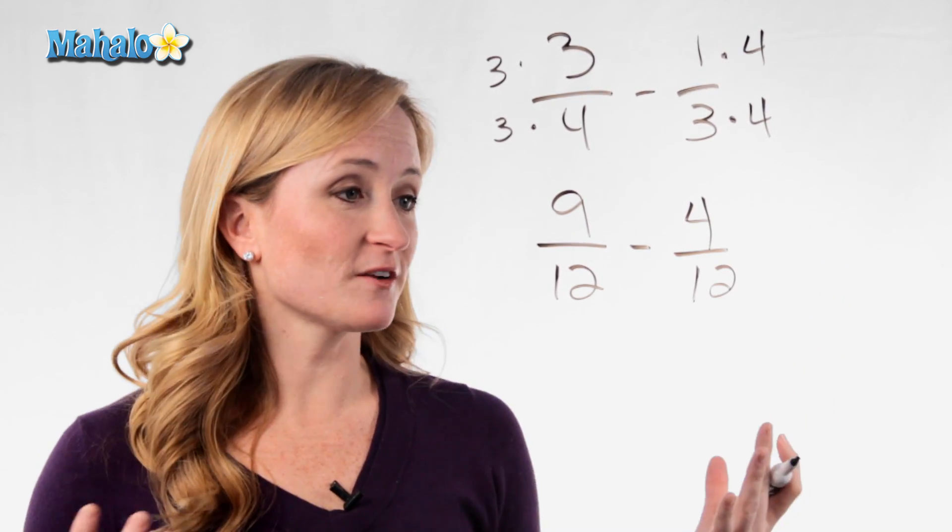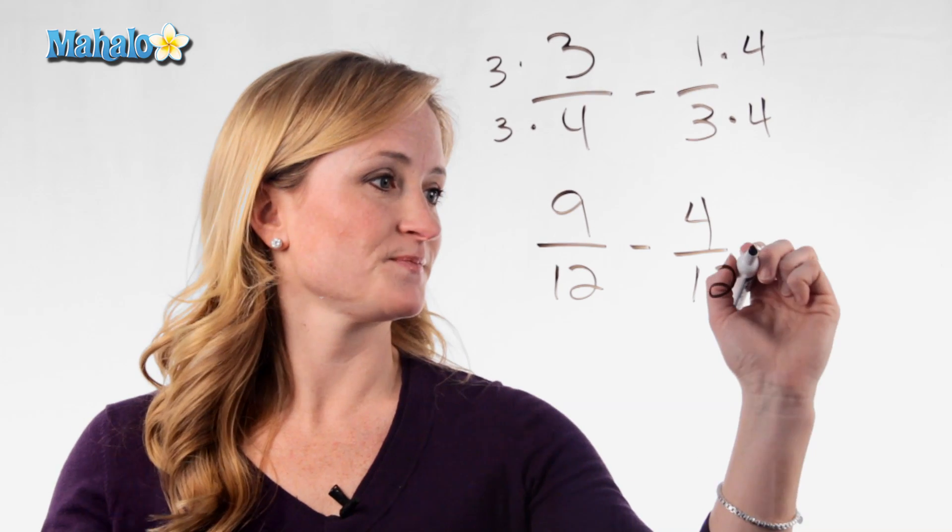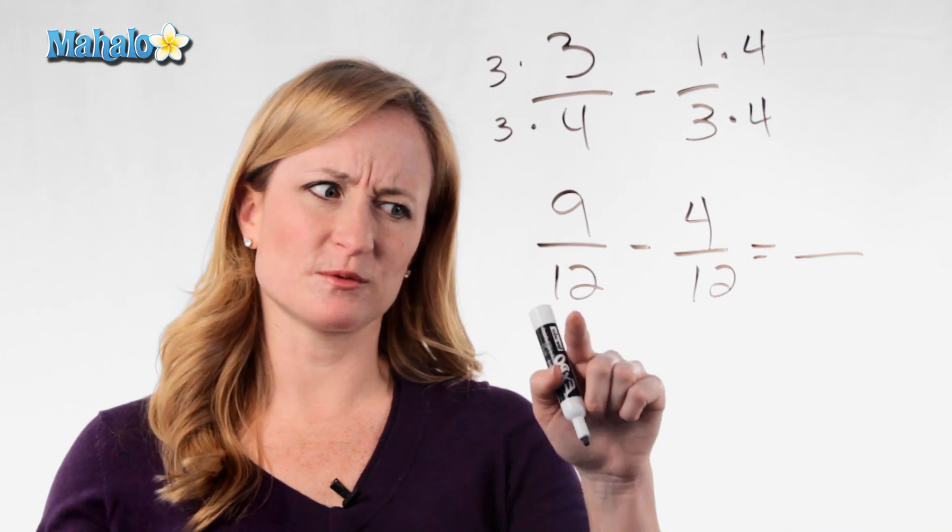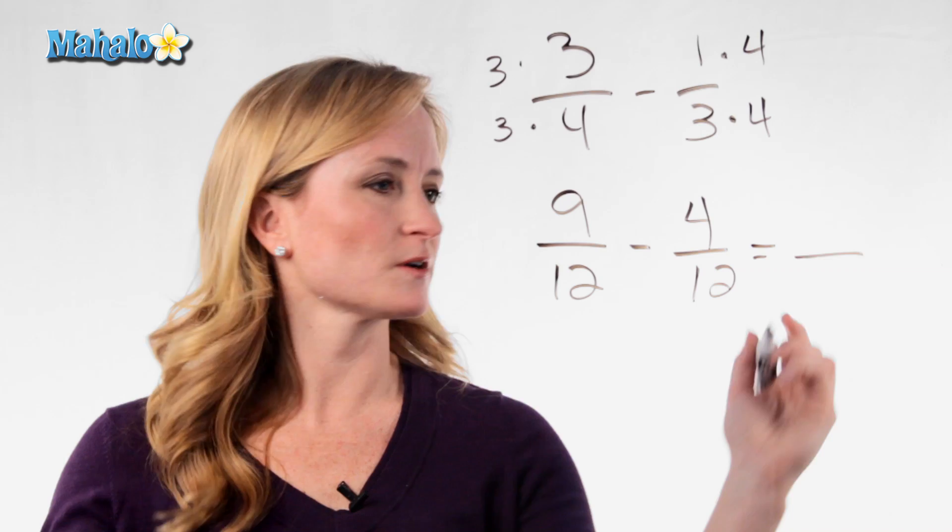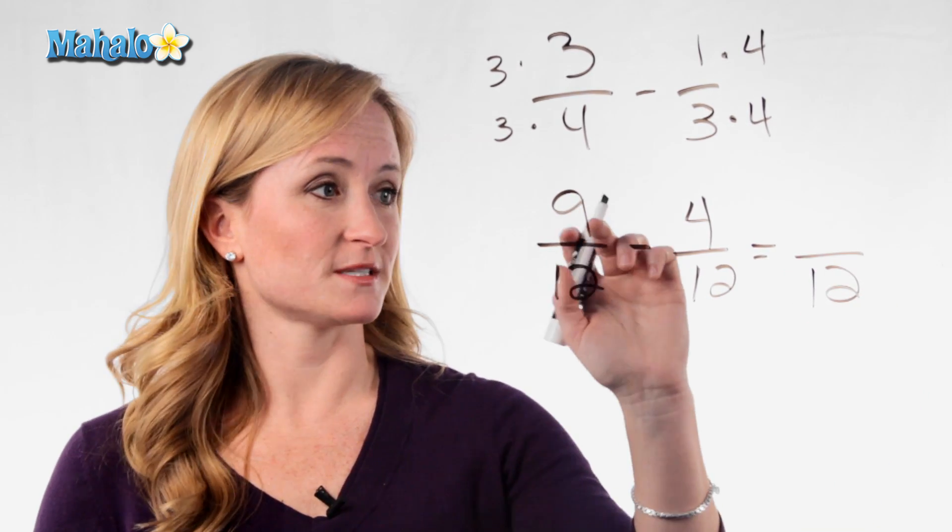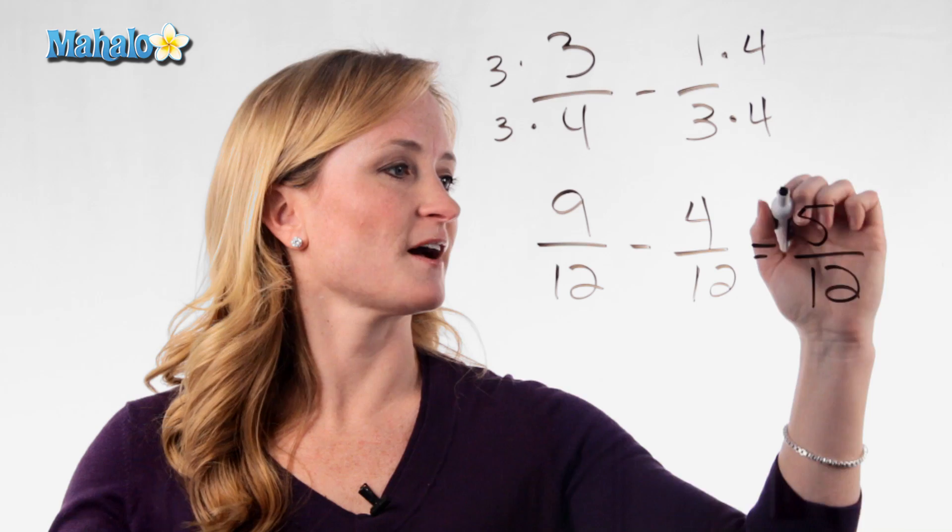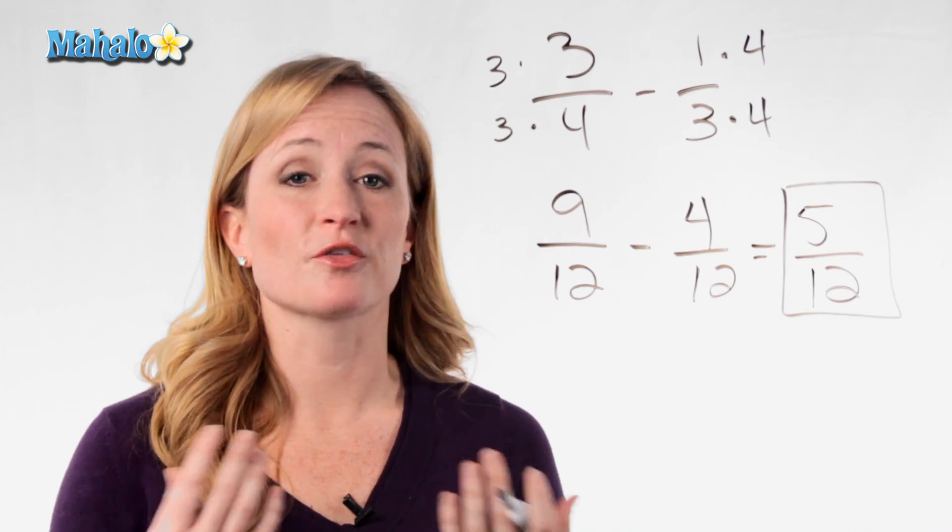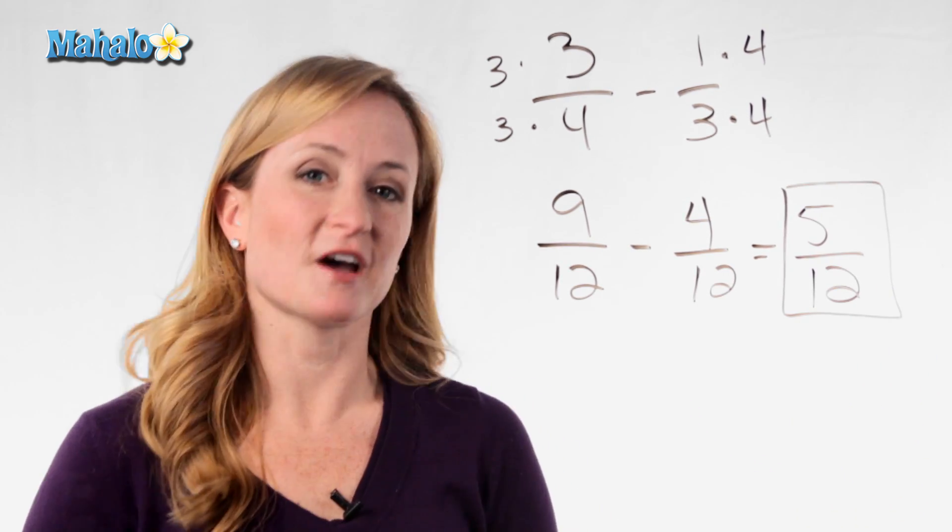So we now have a new set of fractions that we can actually subtract. Remember, you don't subtract the denominator because that would be 12 minus 12 is 0. That wouldn't work. So you leave the 12 and you just subtract the top numbers. So it's 9 minus 4 is 5. So your answer to 3 fourths minus 1 third is 5 over 12.